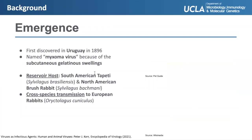Getting into the background, let's discuss the emergence of myxoma virus. Although myxoma virus is most known for the carnage it inflicted upon European rabbits, it was actually first discovered in Uruguay all the way back in 1896, when researchers were taking a look at their local tapetes. Regarding the etymology of the virus, it was dubbed myxoma virus because it caused subcutaneous gelatinous swellings in its natural reservoir hosts. In Latin, myxoma virus translates into mucus tumor virus.